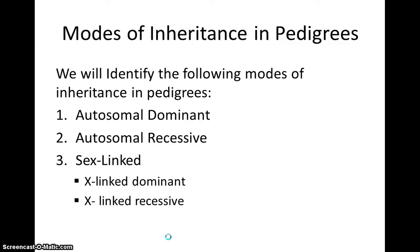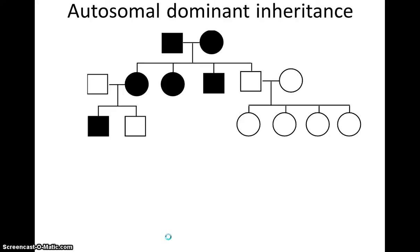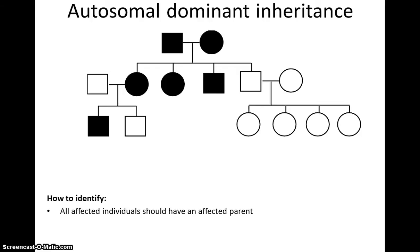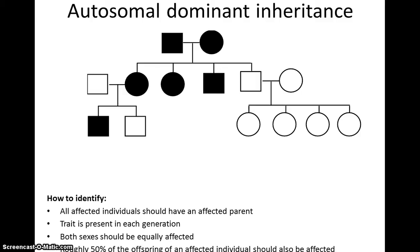We're going to focus on identifying genotypes, going through the same pedigrees from the previous lesson. As a reminder, this autosomal dominant inheritance pedigree — we can tell it is such because all affected individuals have an affected parent, we see the trait in every generation, both males and females are affected, and about half of offspring are affected. Because it's autosomal dominant, I'll use A as our allele. Any individual that has the trait will have a capital A, since if the dominant allele is present it is expressed.